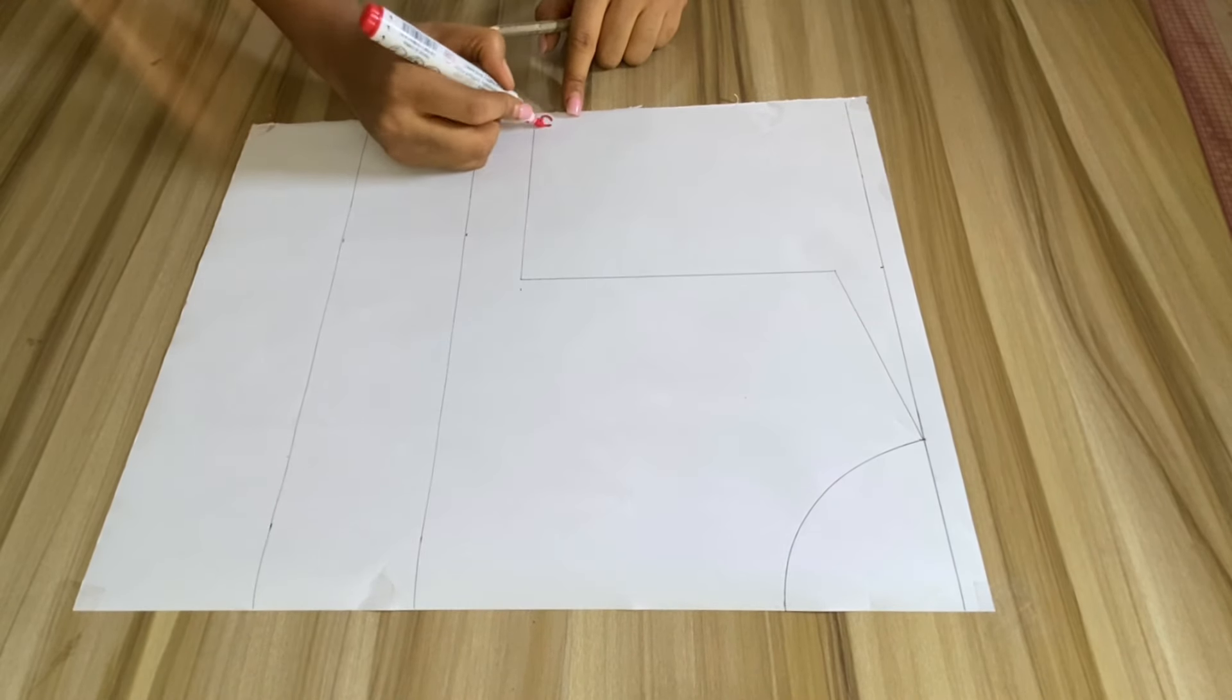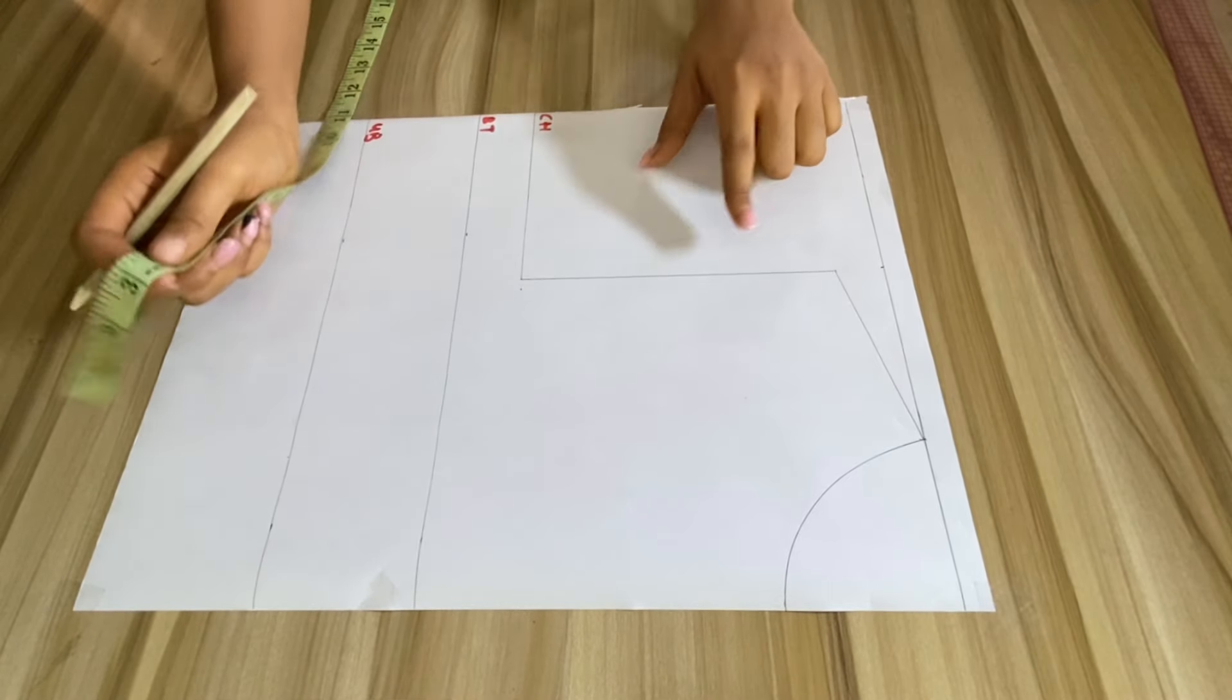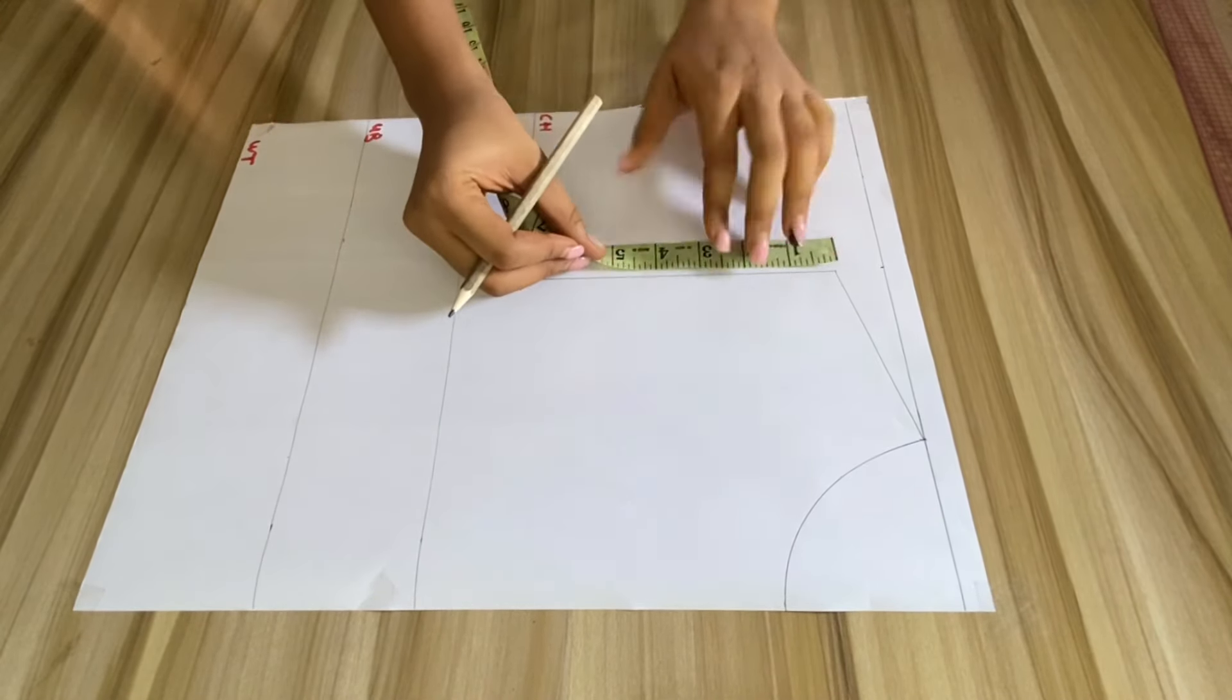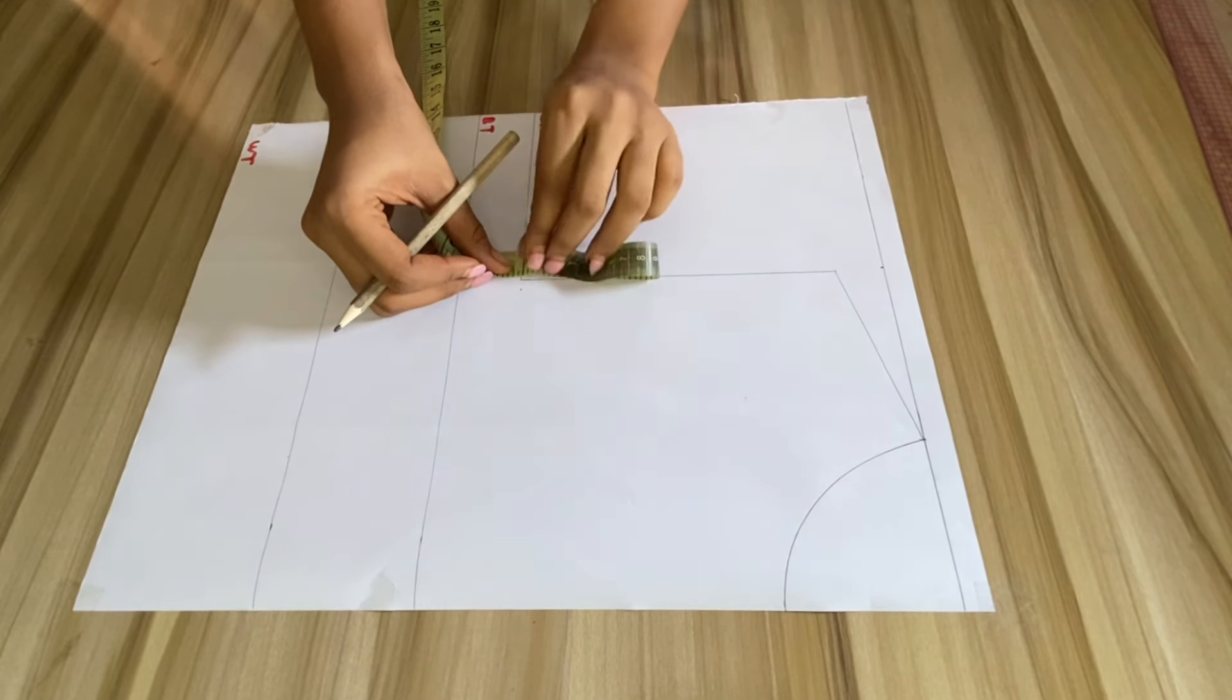I'm just labeling the lines. At the armhole side, I'll just be dividing it into two and mark the points there.